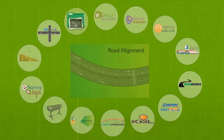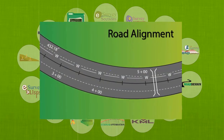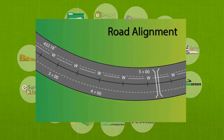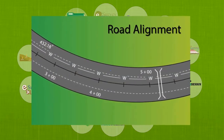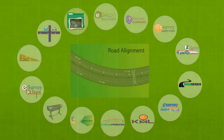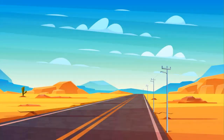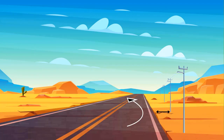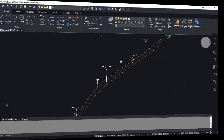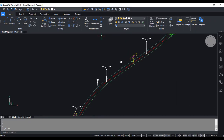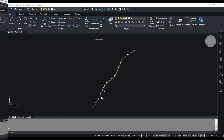Hello everyone, welcome to the introduction video about the Road Alignment Plus module in the eSurveyCat package. Road Alignment Plus is a collection of auto-list commands that enhance the road alignment drawings such as utility shifting, alignment modification, or LS band enhancements.